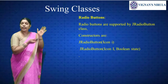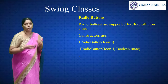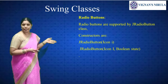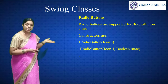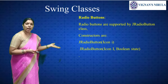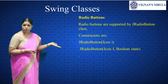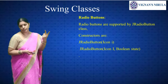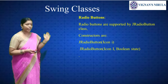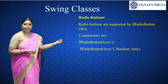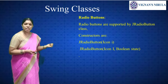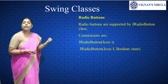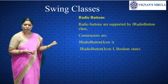Next, radio buttons are supported by the JRadioButton class, which is a concrete implementation of AbstractButton. Constructors include JRadioButton(Icon i) and JRadioButton(Icon i, boolean state). The boolean state is either true or false. The icon and text are specified. If the state is true, the button is initially selected; otherwise it is not.